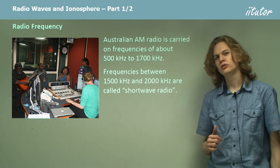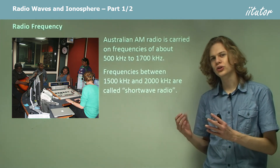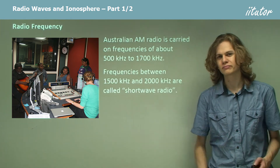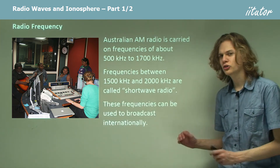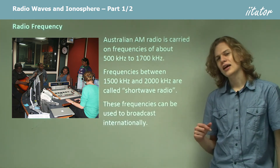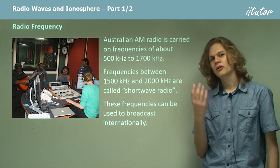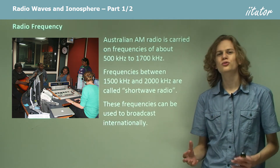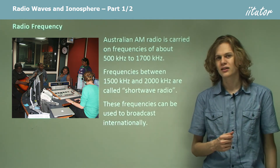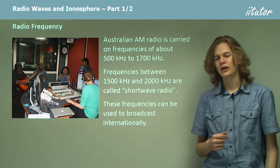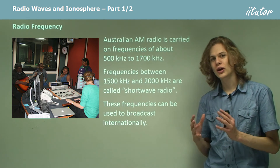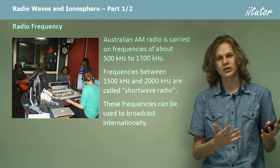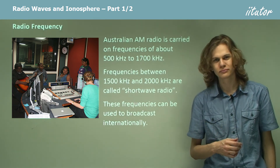It's possible to have shortwave radio receivers and shortwave radio transmitters. Because they bounce off the ionosphere, they can be sent very long distances, and in fact can be used to transmit internationally — meaning we can send a shortwave radio signal to a different country, even if it's a long distance away.